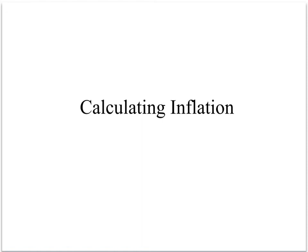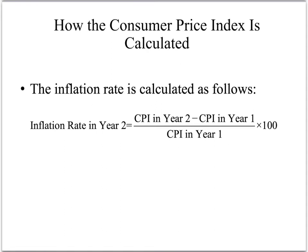We're going to go over calculating inflation rates based on CPI numbers. The Consumer Price Index inflation rate is calculated with the following equation: the inflation rate in year 2 is equal to the CPI in year 2 minus the CPI in year 1, divided by the CPI in year 1, times 100.